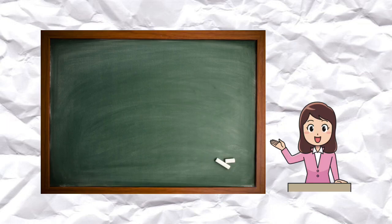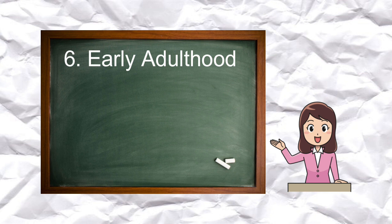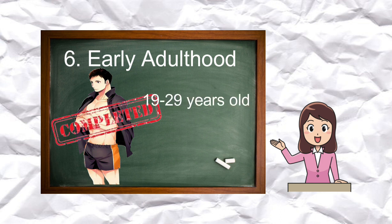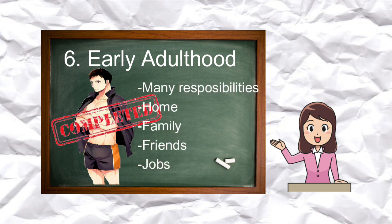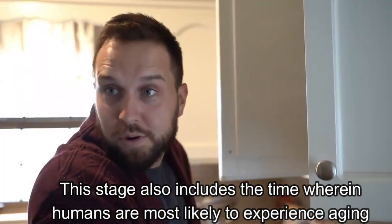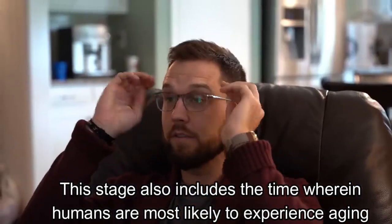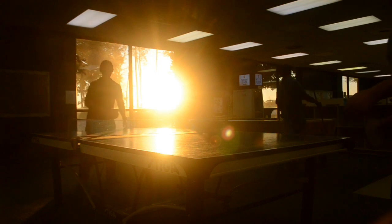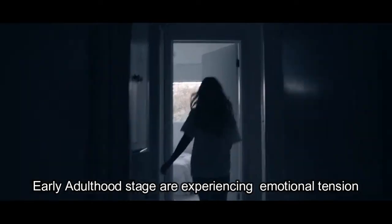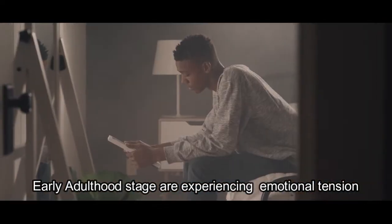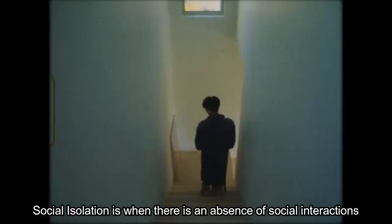Now let us look at the sixth stage of human development: early adulthood. In this stage, the physical development and maturation of people ages 19 to 29 years old is complete. Humans in this stage accomplish many responsibilities including finding a home or settling down, establishing family or a circle of friends, and getting a good job. This stage also includes the time wherein humans are most likely to experience aging problems such as changes in skin, vision, and reproductive capability. When it comes to emotions, a person in early adulthood may experience emotional tension when they encounter events or thoughts that make them feel frustrated, angry, or nervous.